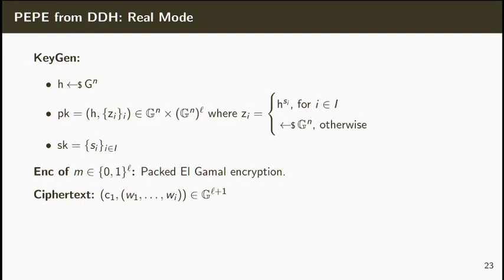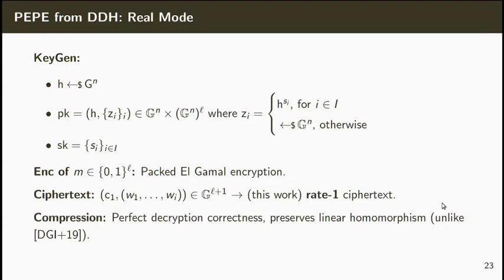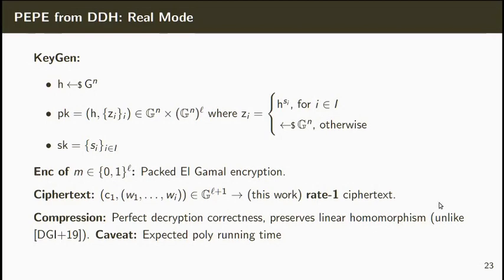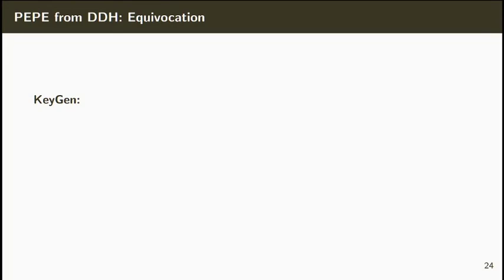To encrypt a message M, we simply perform a packed ElGamal encryption. The resulting ciphertext is composed by L plus 1 group elements, and we show how to compress such a ciphertext down to rate 1. We believe that our new compression technique might be of independent interest, as it achieves perfect correctness and preserves the linear homomorphism of the ElGamal encryption scheme, unlike previous DDH-based compression techniques. The caveat of our compression technique is that it only achieves expected polynomial running time. In the ideal mode, the public key is set in such a way that the simulator knows the discrete log of all the components of the public key.